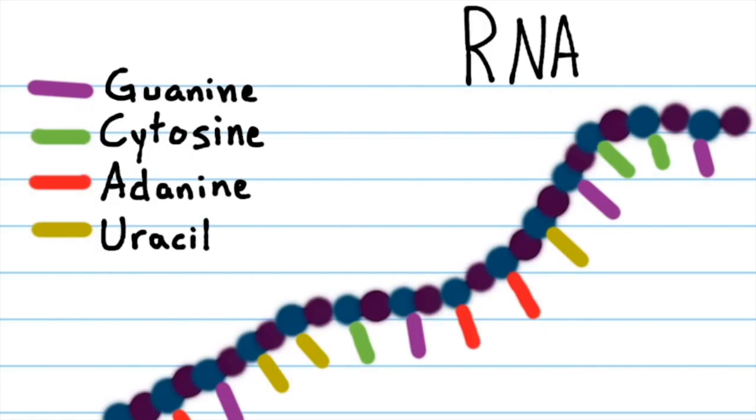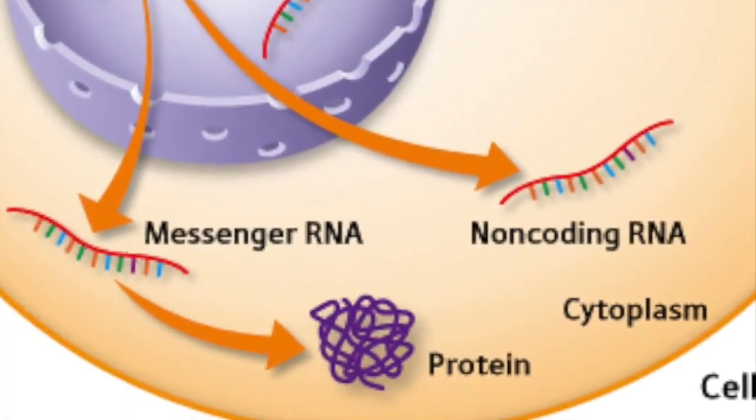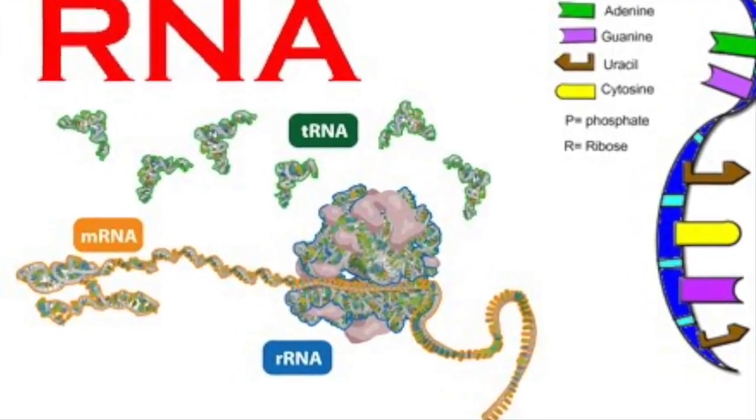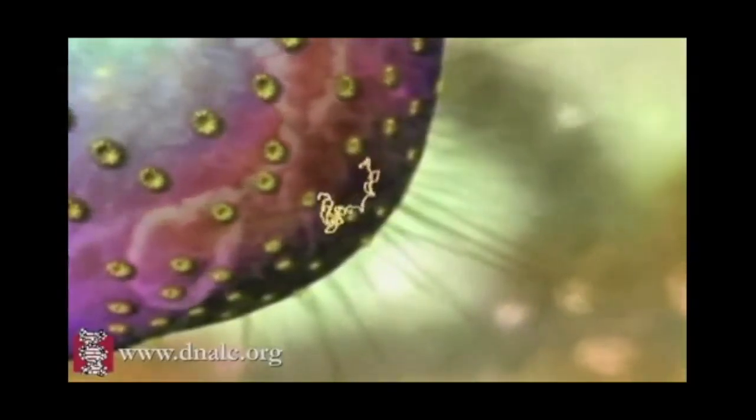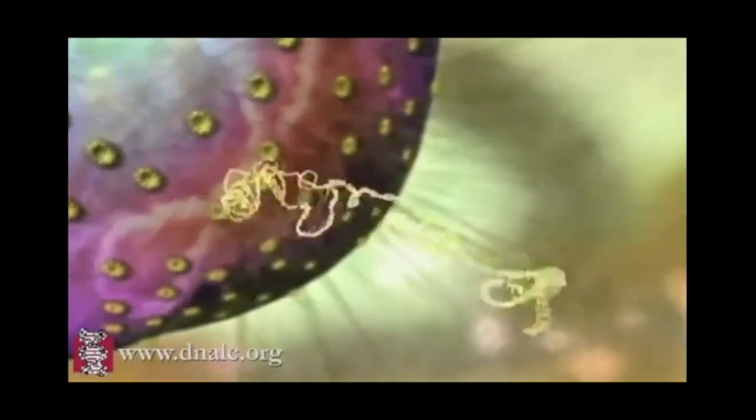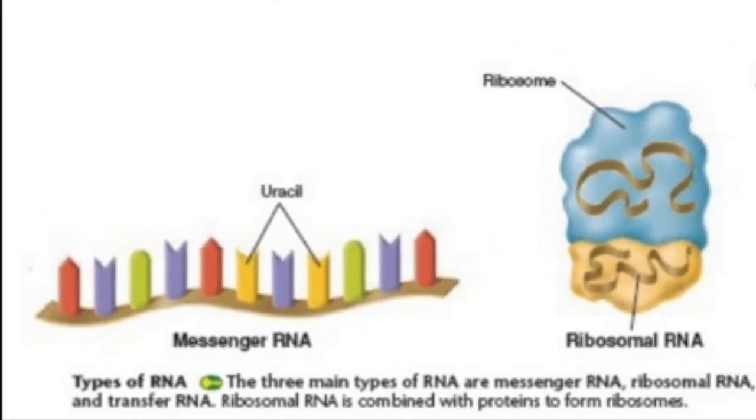There are three types of RNA directly involved in protein synthesis. Messenger RNA, or mRNA, carries the instructions from the nucleus to the cytoplasm. mRNA is produced in the nucleus, as are all the RNAs.